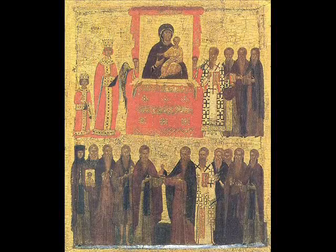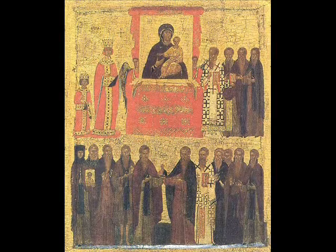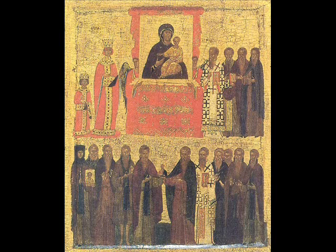It's flanked by two angels — the Virgin was often shown as guarded by angels — and it was known as the Hodegetria in Greek, meaning 'she who points the way.' It was believed to have been brought to Constantinople from Jerusalem in the 5th century AD and to have been painted originally by Saint Luke.